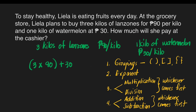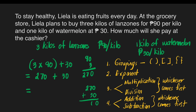I guess we're ready. So we'll do the groupings first. We have 3 times 90: 0 times 3 is 0, 9 times 3 is 27, giving us 270. Then copy 30. Next, we will add 270 and 30: 270 plus 30, that's 0, then 7 plus 3 is 10, carry 1, 2 plus 1 is 3. That gives us 300. So, Laila will pay 300 pesos at the cashier.